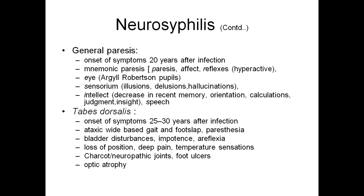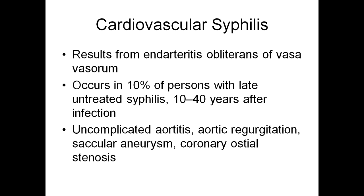General paresis: onset of symptoms 20 years after the infection; sensorium may be affected — patient can have hallucinations, illusions, and disturbance in intellect. Tabes dorsalis: onset of symptoms 25 to 30 years after infection; patient may have ataxic broad-based gait and foot slap, paresthesia, bladder disturbances, loss of position and deep pain sensation, optic atrophy, and Charcot neuropathic joints may even be present, along with foot ulcers.